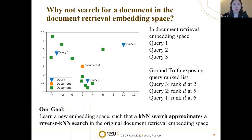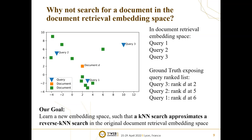A common question we receive is: why not search for a document in the document retrieval embedding space? Here I use an example to illustrate that this is an asymmetric problem. In this graph, assuming the embedding space is only 2D, document D is closest to query one, then query two, then query three. However, the ground truth exposing query rank list is the exact opposite — although document D is furthest from query three, query three ranked document D at the top. So it should be ranked first in the exposing query rank list. Our goal is to learn a new embedding space such that a KNN search in the new space approximates the reverse KNN search in the original document retrieval embedding space.